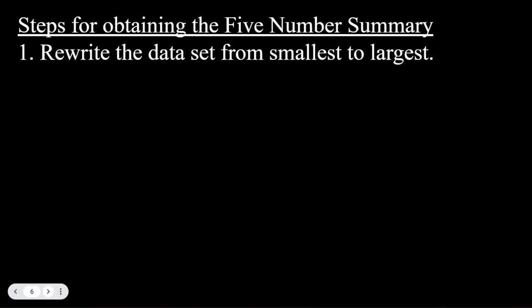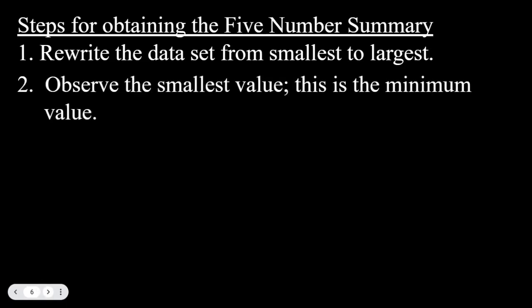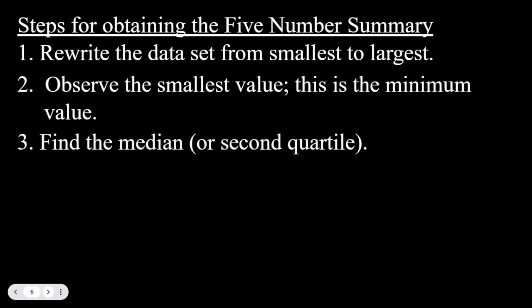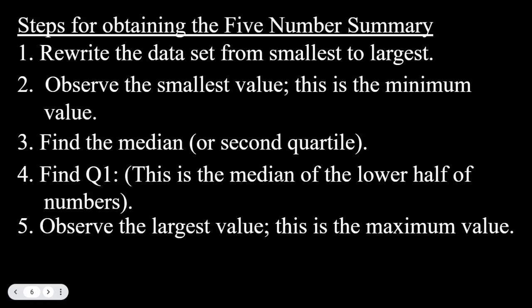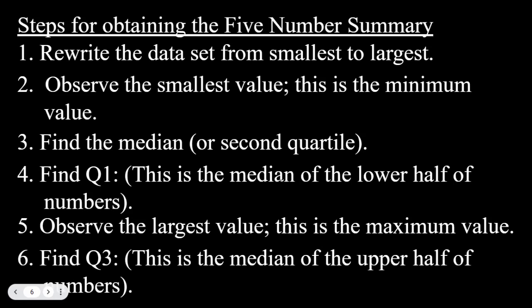Steps for obtaining the five-number summary by hand: first, rewrite the data set from smallest to largest. Second, observe the smallest value and label it the minimum. Third, find the median, which is the second quartile—the middle number. Fourth, take the median of the lower half of values to find Q1. Fifth, observe the largest value and label it the maximum. Sixth, take the median of the upper half to find Q3. There is also a way to do this on a calculator.